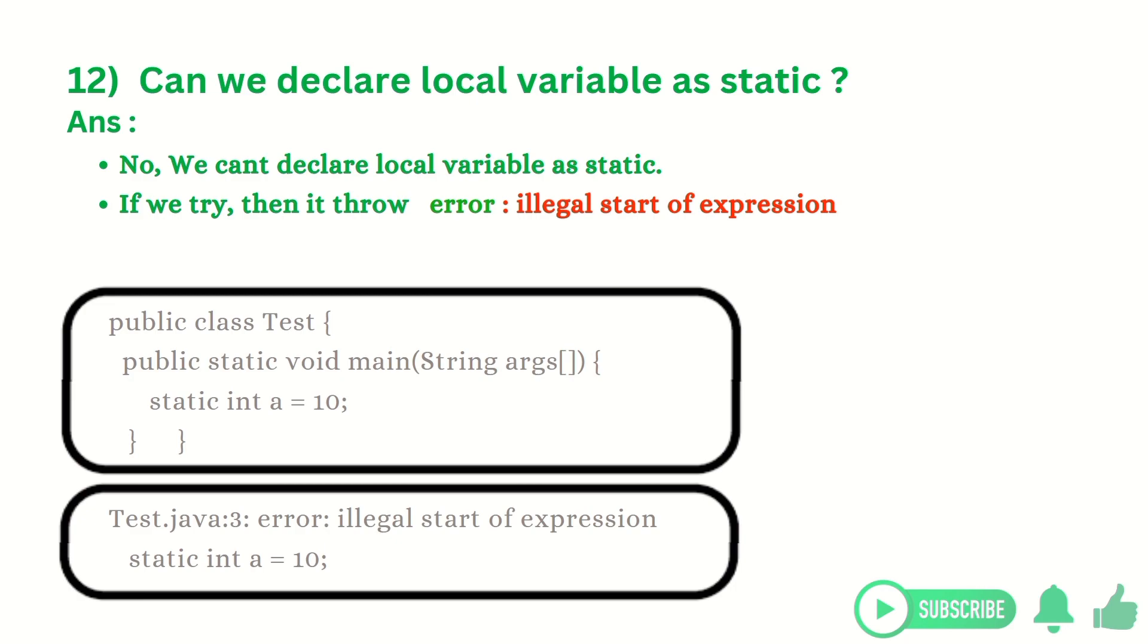On the screen you can see one class named Test. Inside that class there is a main method, and inside that main method there is one variable which is nothing but a local variable, local variable a, and this is declared as static: static int a equals 10.